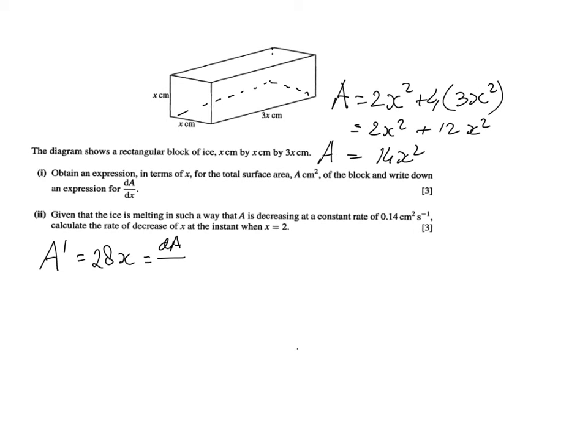Because we move on to the second part. Given that the ice is melting in such a way that A is decreasing at a constant rate of 0.14 cm² per second, calculate the rate of decrease of x at the instant when x is 2. Now that's a lot of information. That sounds quite scary and difficult, but it's not. It's connected rates of change.